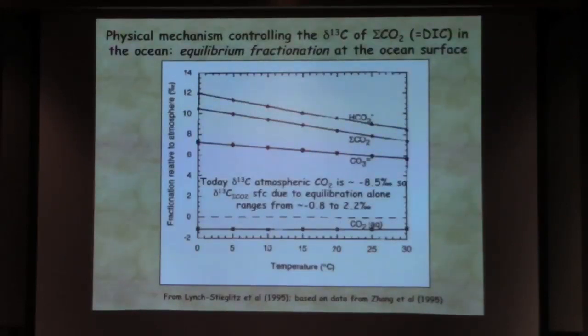What this does, in absence of any other process today, would be—this is the atmospheric delta C-13 today, it's about minus 8.5 per mil—so what it would do is say that the delta C-13 of the ocean should range at the surface between about minus 0.8 and something like 2.2 per mil, depending on where you are in the temperature of the ocean.